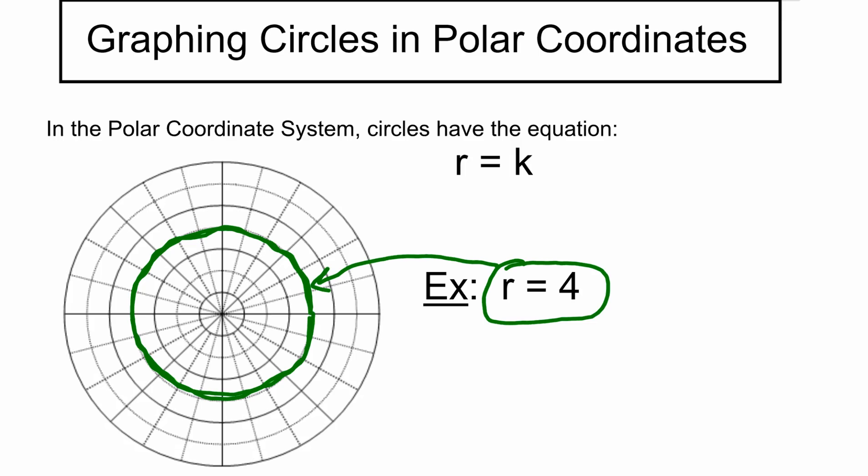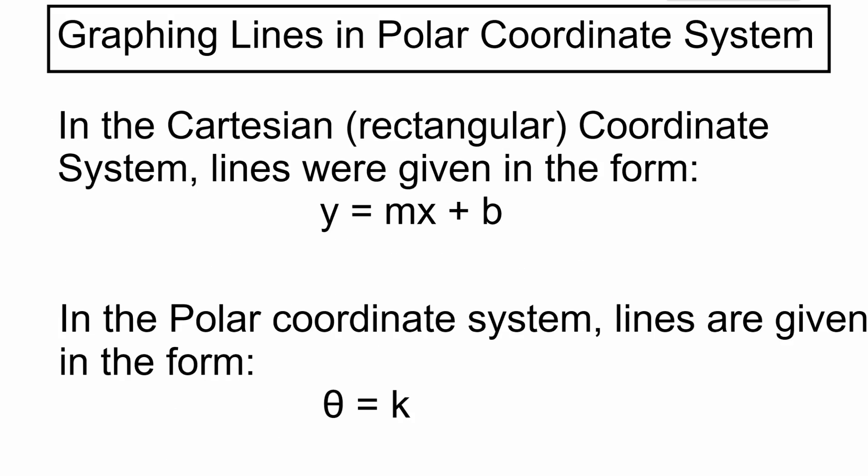What about lines? In the Cartesian coordinate system, we're familiar with y = mx + b, called slope-intercept form. In advanced math like pre-calculus, we use y - y₁ = m(x - x₁), called point-slope form. There are many ways to write a line in Cartesian coordinates. In the polar coordinate system, lines are given as θ = k.